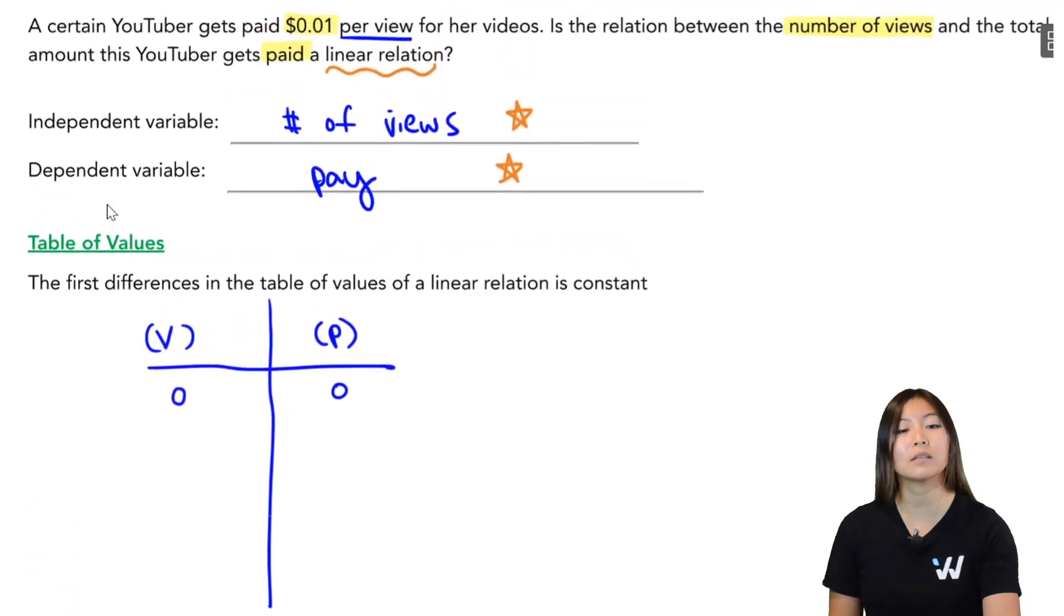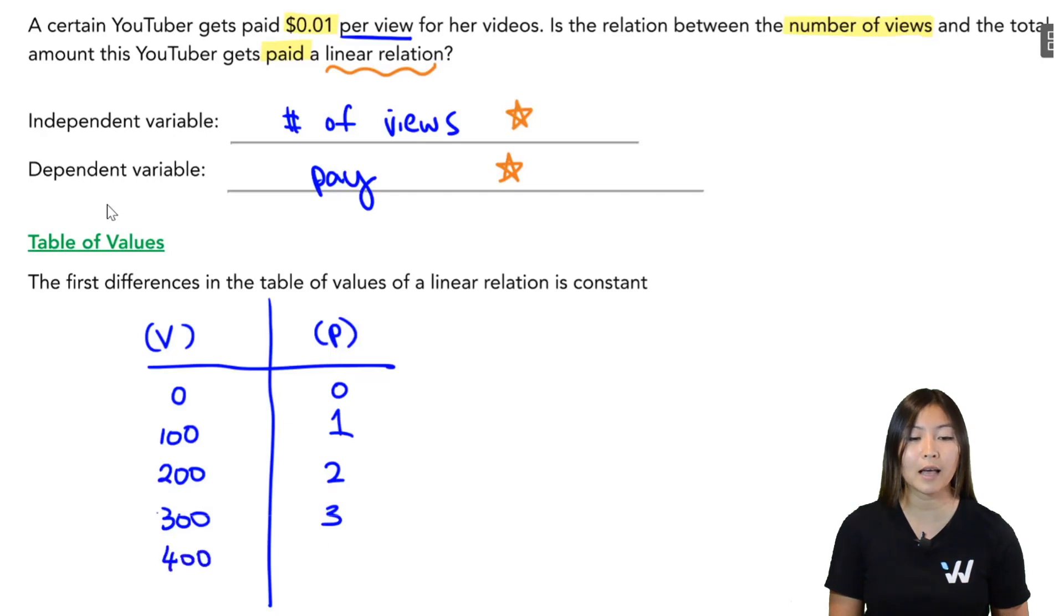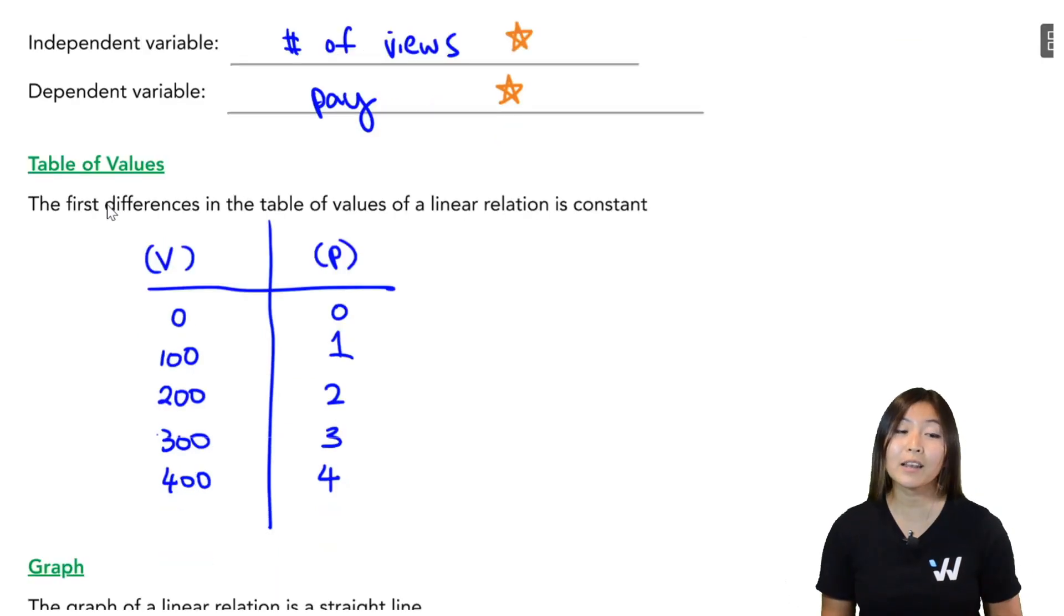What if I have one view? That's one cent. Two views, that's two cents and so on. But I don't like working with small decimals. I find them harder. So instead, I'm going to jump ahead to 100 views. Because for every 100 views, I get paid 100 cents, which is $1. Now I'm going to look at 200 views. That's $2. 300 views, that's $3. 400 views, that's $4.